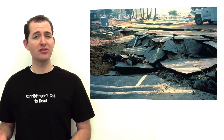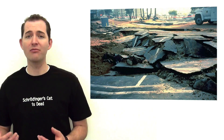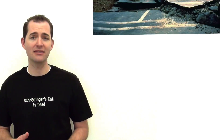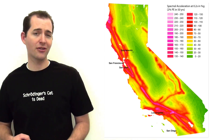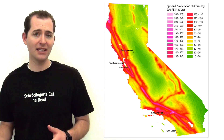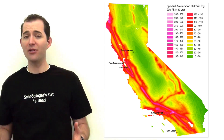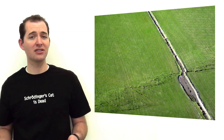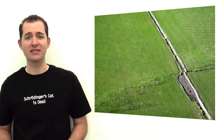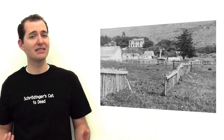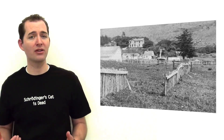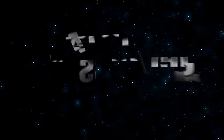Despite having few distinguishing features, transform boundaries do display the great power of moving plates. This can be seen in the sheer number of earthquakes that take place. Transform boundaries are also known for displaying strange features on the surface, such as stream beds or fence lines that have been separated over time.